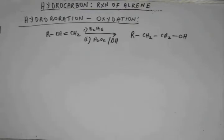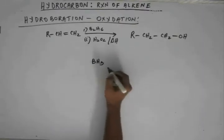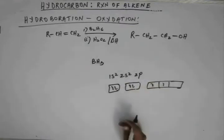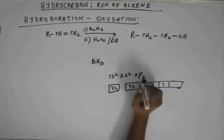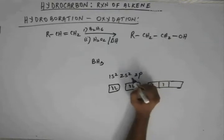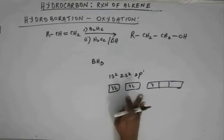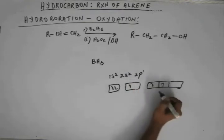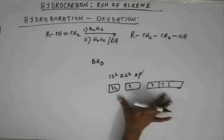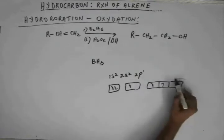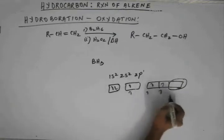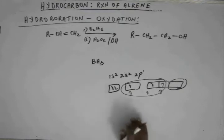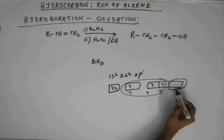BH₃ is an important Lewis acid in organic chemistry. Boron has atomic number 5, and its electronic configuration is 1s², 2s², 2p¹. Boron makes 3 bonds — the 2s² electron goes to an excited state into the 2p orbital, giving 2s¹, 2p¹, 2p¹. These three unpaired electrons participate in bond formation, leaving one p orbital empty. So boron has only 6 electrons, its octet is incomplete, and that empty orbital accepts a pair of electrons to complete its octet — making it a good Lewis acid.